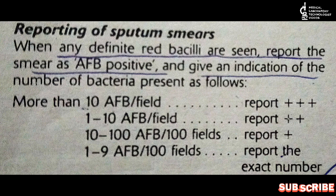Second, if you see 1 to 10 acid fast bacilli per field — meaning you saw 6, 7, or 8 AFB per field — that time you have to report 2 plus. As the bacteria decrease, our reporting in plus also decreases. If you see 10 to 100 acid fast bacilli per hundred fields, that time you will report 1 plus.